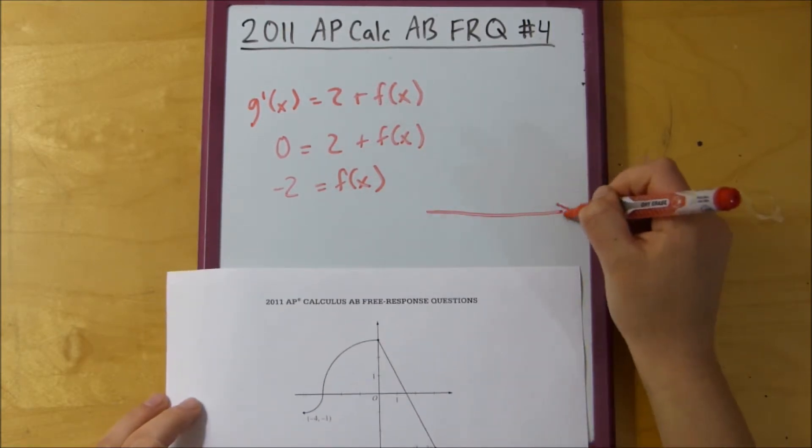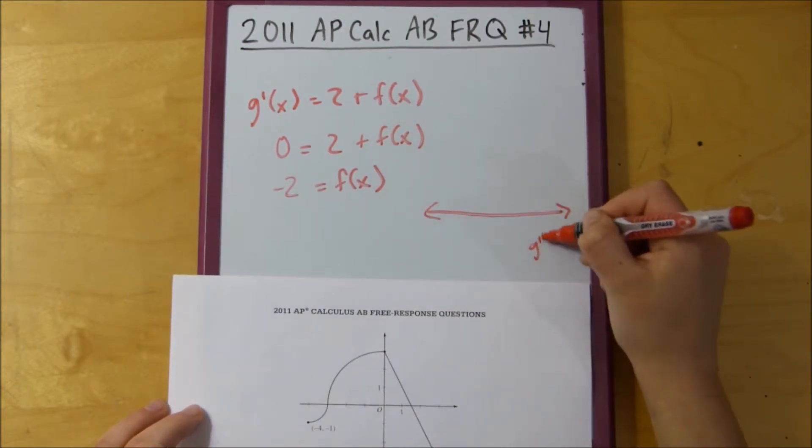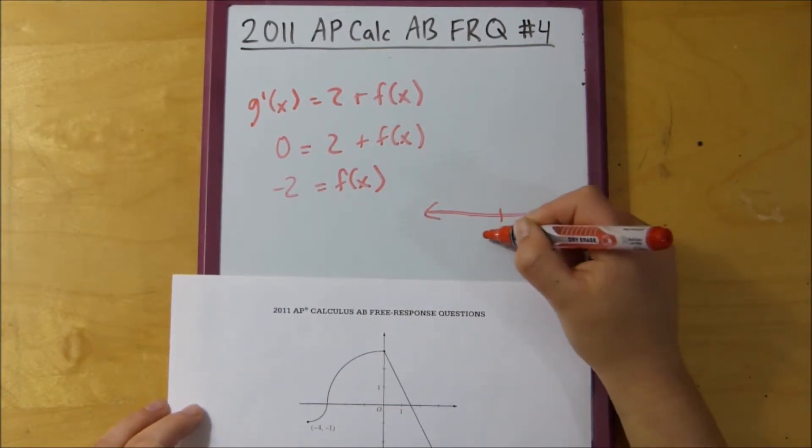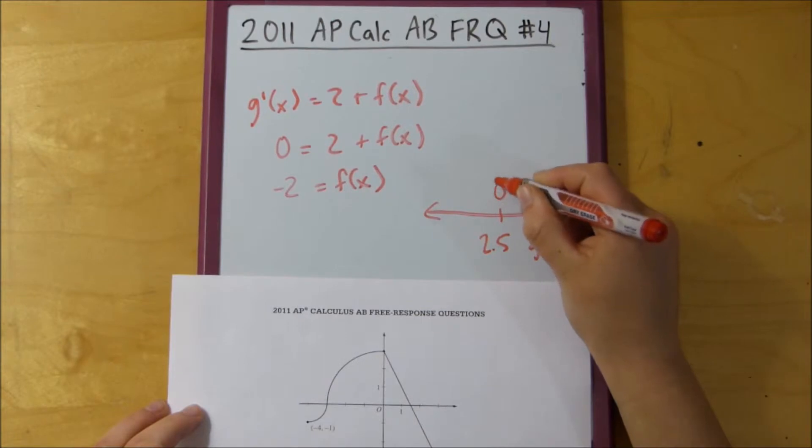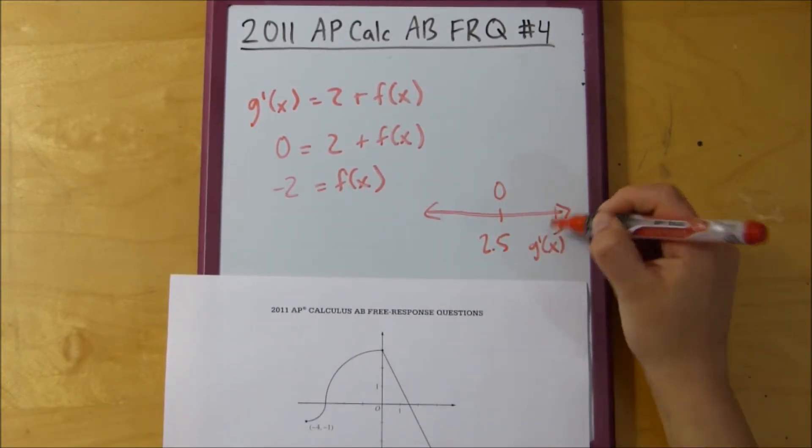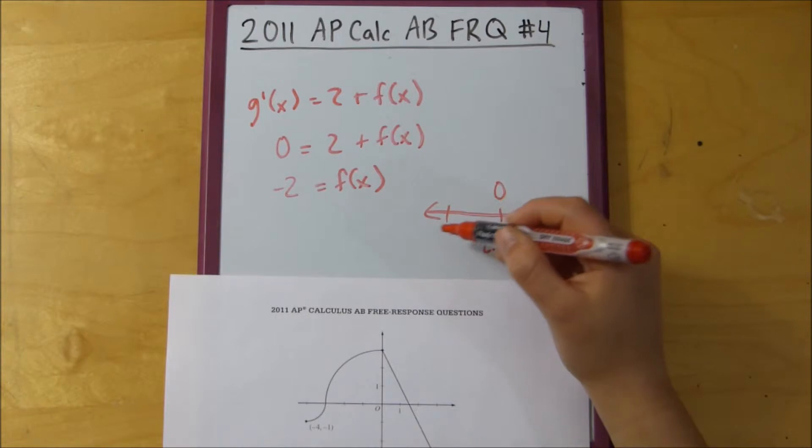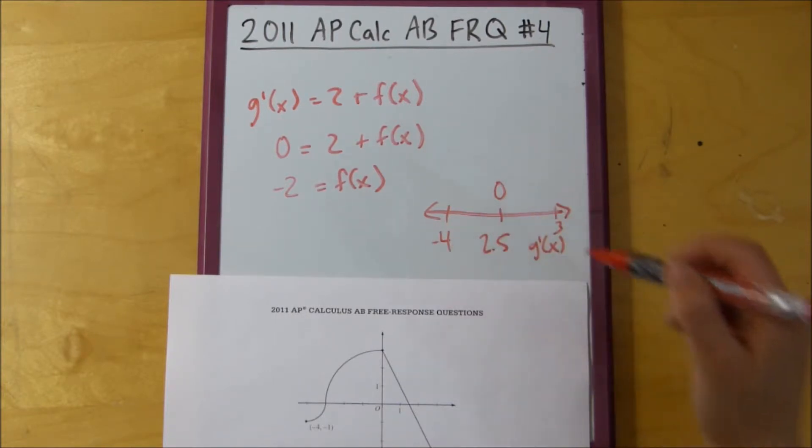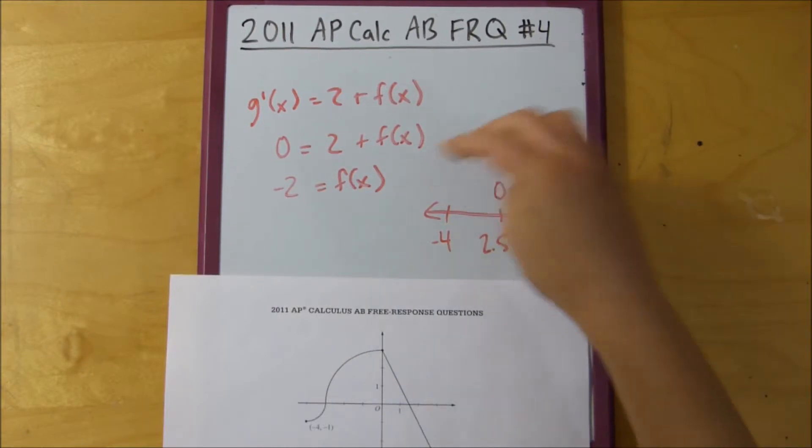So, set up our little number line, so g prime of x, it equals 0 at 2 and a half. And then we test what the points are to test whether g prime of x is positive or negative in these intervals to figure out if it is actually a maximum or not.